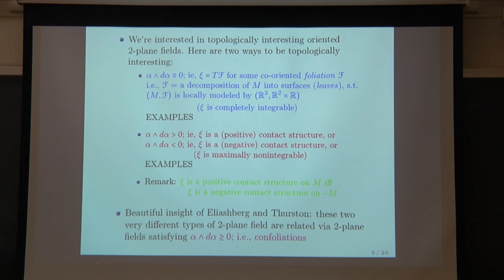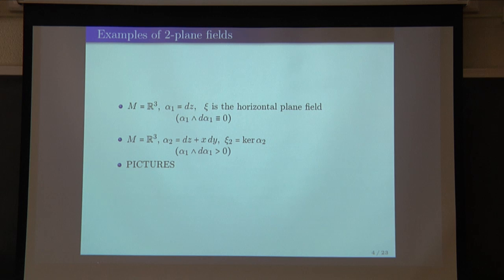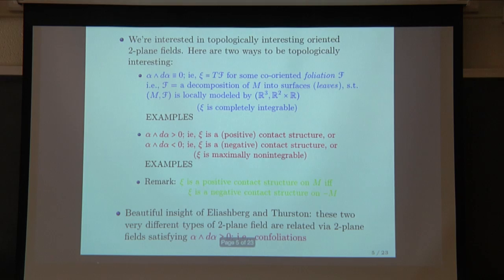The second type is when α ∧ dα is strictly positive or strictly negative — the two-plane field is maximally non-integrable. Even locally you can't integrate to get the two-plane field as the tangent plane field of some surface. So we're interested in two-plane fields that are either the tangent plane fields of foliations, or that satisfy α ∧ dα > 0, in which case we're thinking about contact structures.